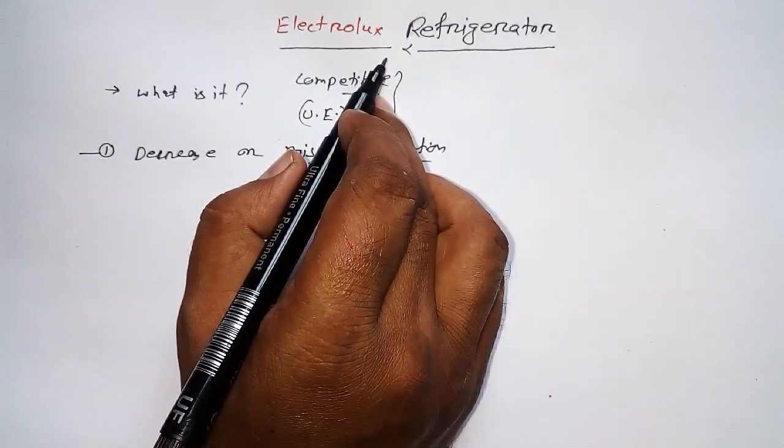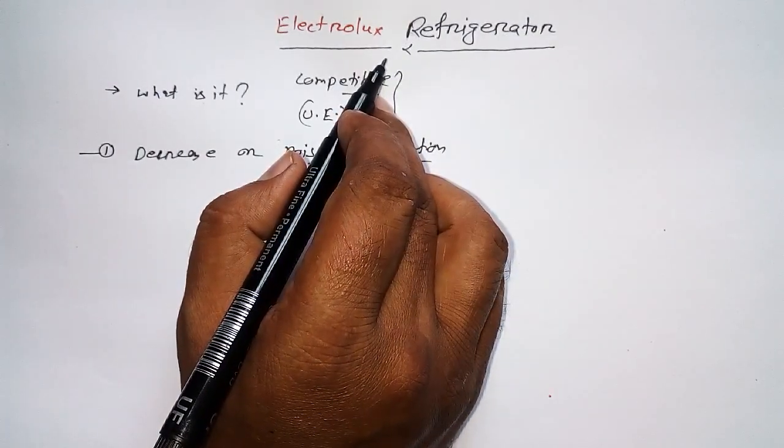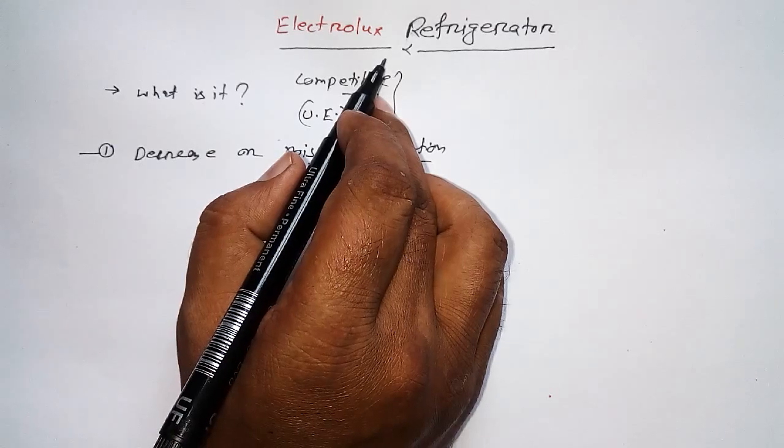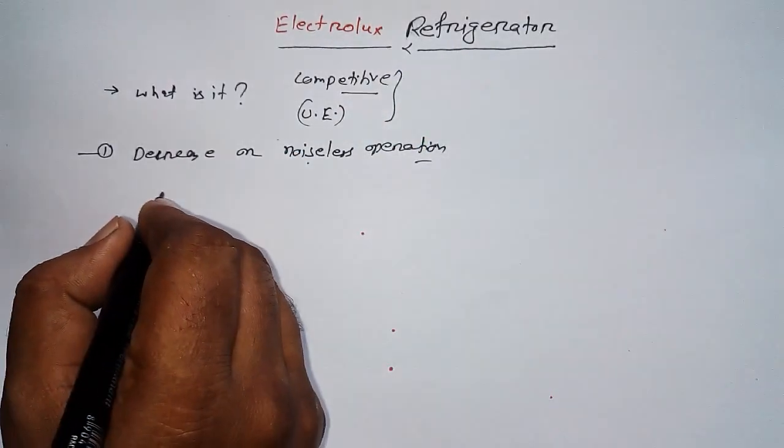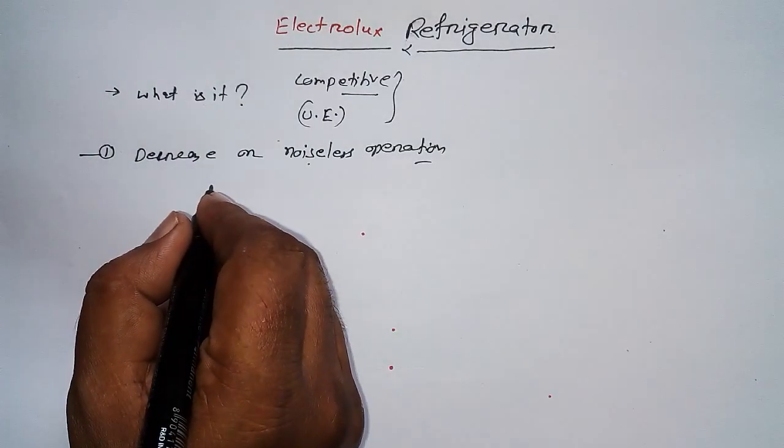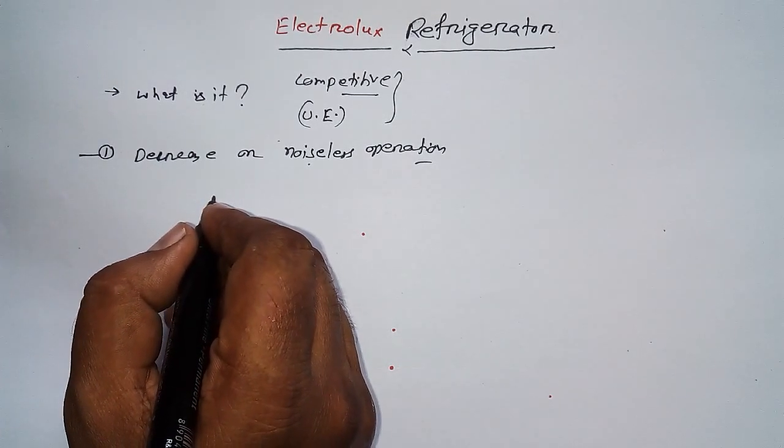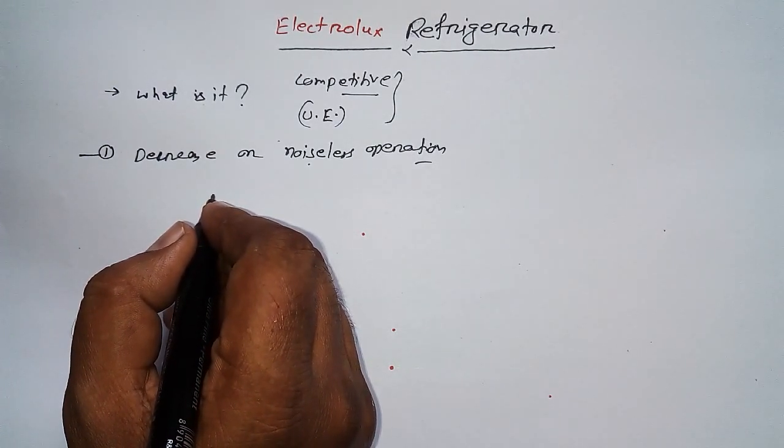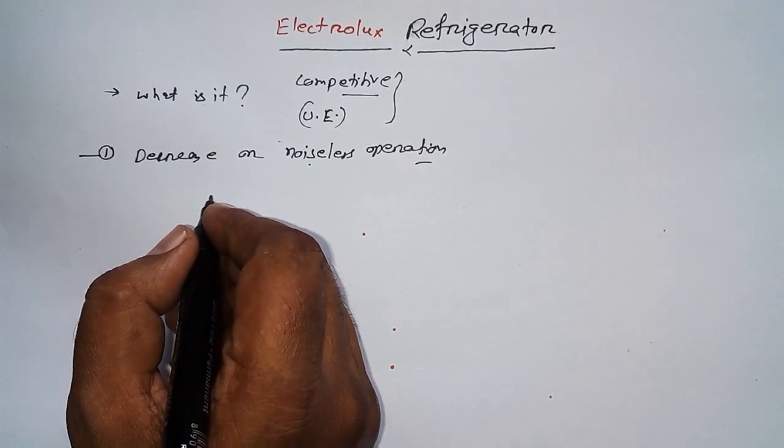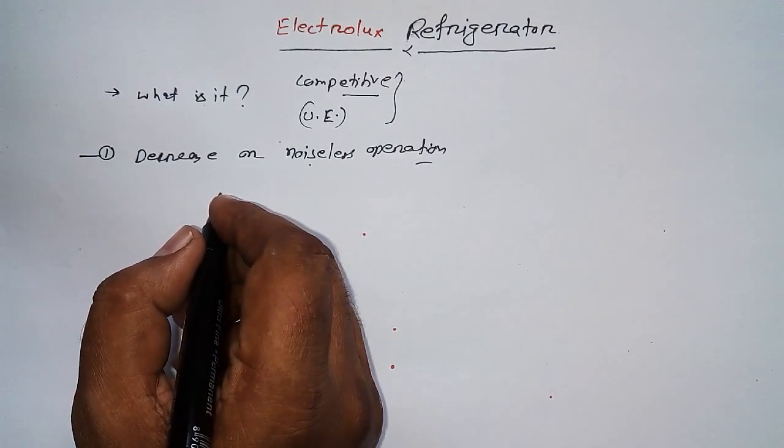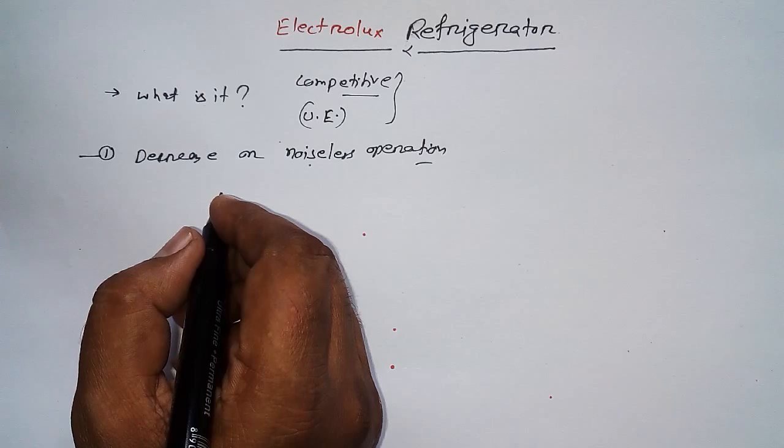Why is it happening? Because we will eliminate or not use a few most important or most common components which we use in case of VARS or VCRS cycle refrigerators.